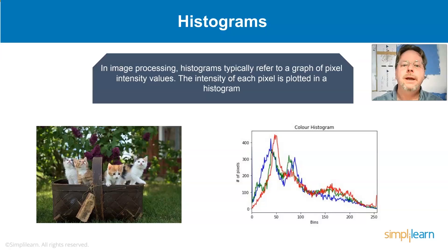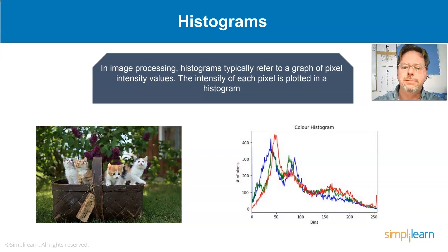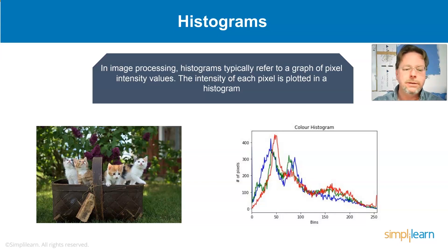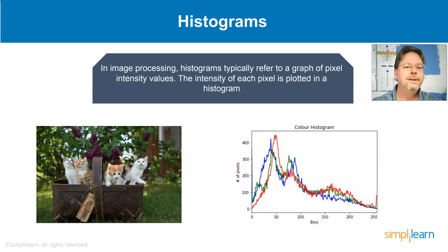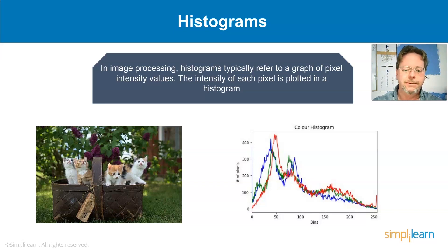There are also histograms. In image processing, histograms typically refer to a graph of pixel intensity values — the intensity of each pixel is plotted in a histogram. Histograms are the beginning of doing different identifications and can be used to look at different things and pull different information out of a picture in data processing.